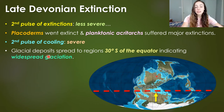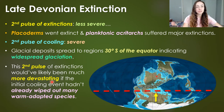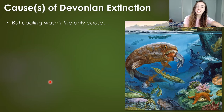Why was this cooling pulse really severe but the extinctions less severe than the first pulse? The second pulse of extinctions likely would have been much more devastating had the initial cooling pulse not already wiped out many of the warm-adapted species. So the already-devastated population of warm-adapted species made this second event less severe than it would otherwise have been.